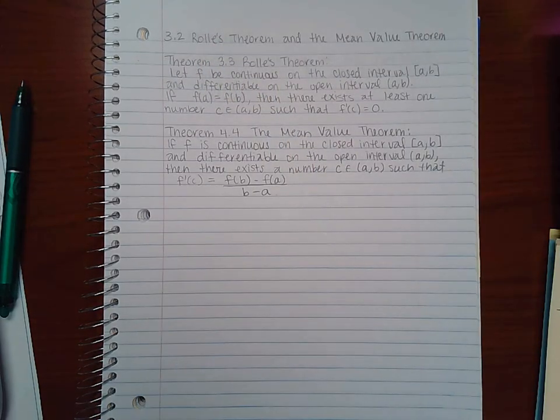For Rolls Theorem, it says let F be continuous on the closed interval [A, B] and differentiable on the open interval (A, B). If F of A equals F of B, then there exists at least one number C such that F prime of C equals 0.